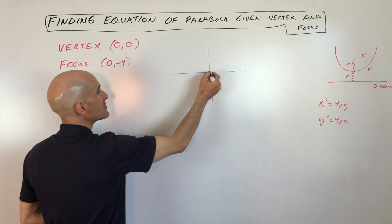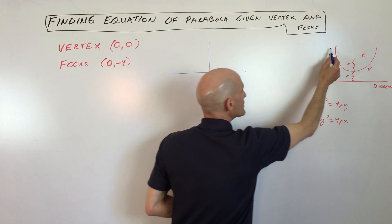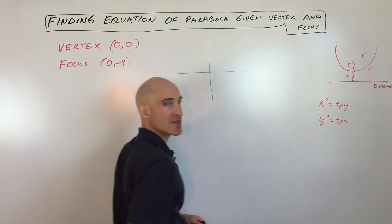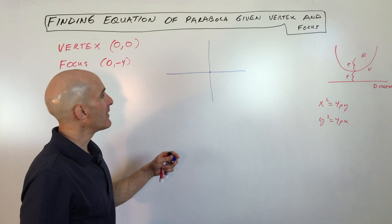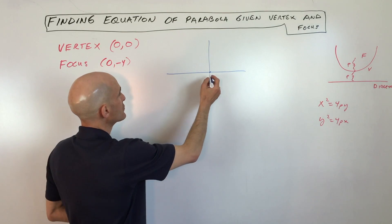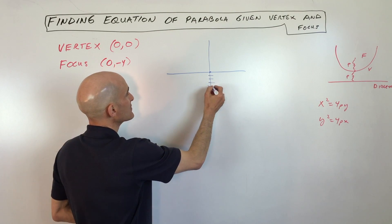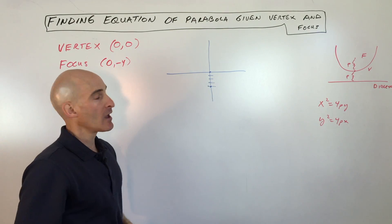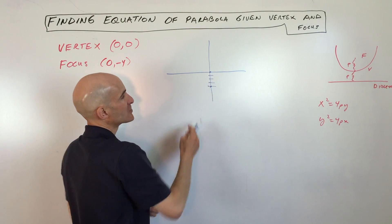So the vertex is here at zero zero, that's where the graph is changing direction, it's where it bends, it's the maximum or the minimum. And then the focus is at zero negative four, so that's going to be right there, and you can see that the parabola is always going to open towards the focus away from the directrix.